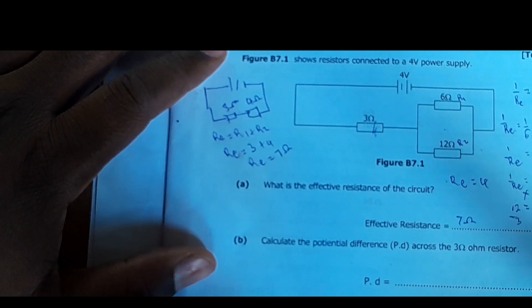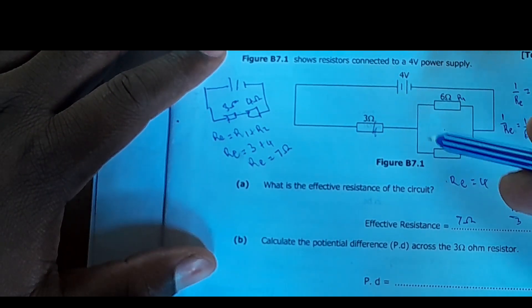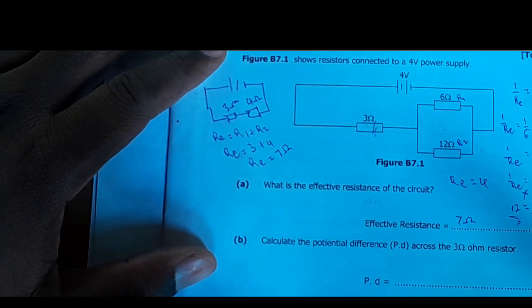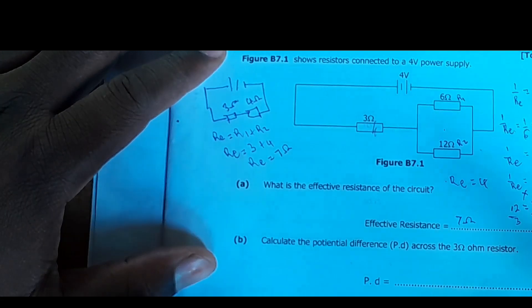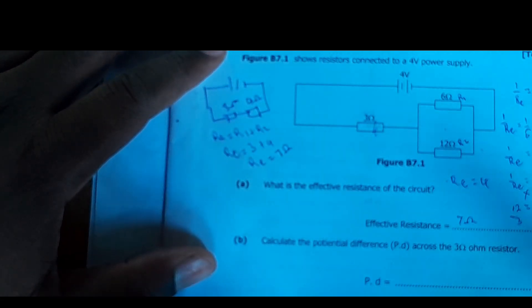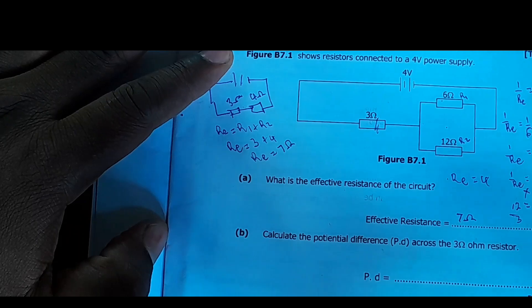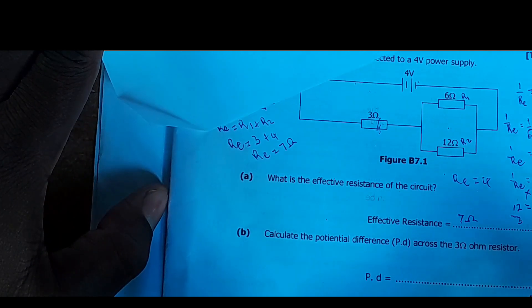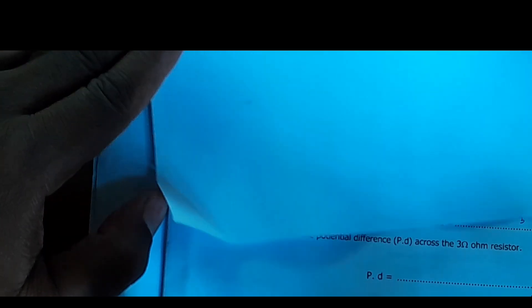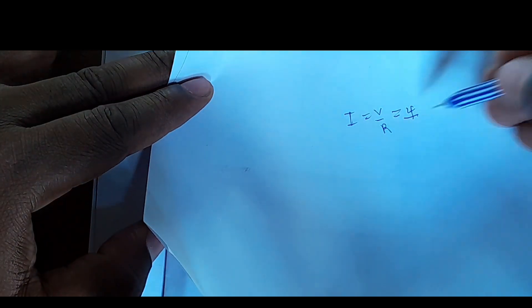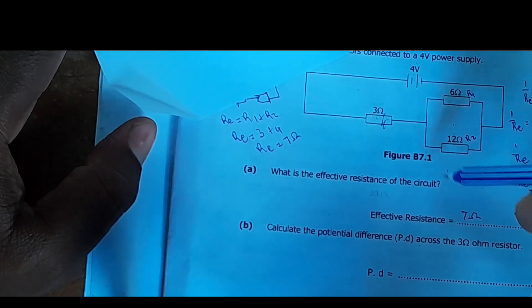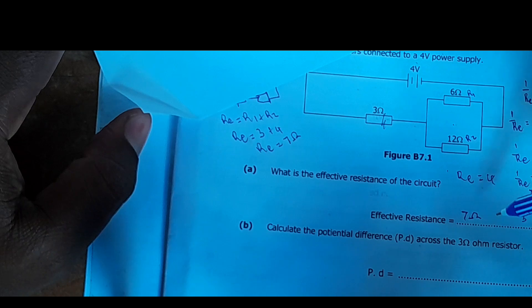Since we have found the total resistance from all the resistors, we can use it together with the supply voltage of 4 volts to find the current flowing through the circuit. The equation we need is: current equals voltage divided by resistance. Our voltage is 4 volts and the total resistance we found is 7 ohms.